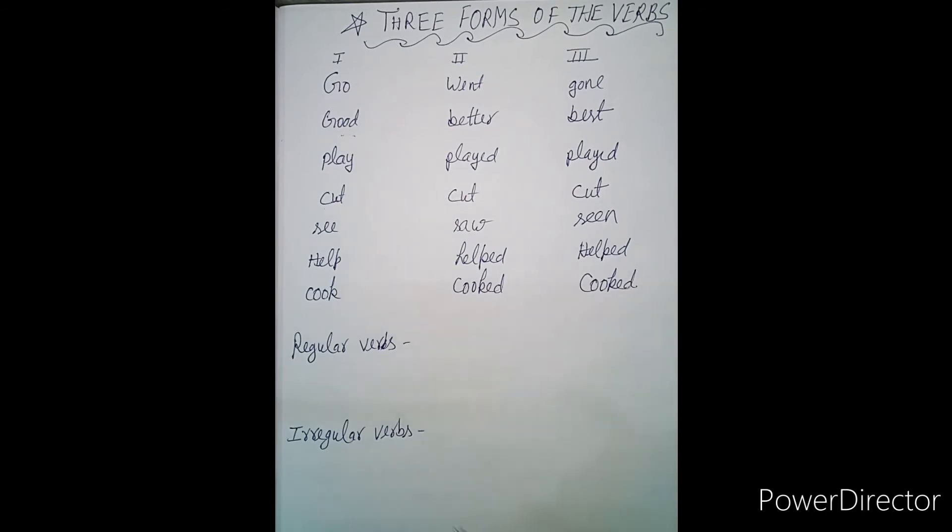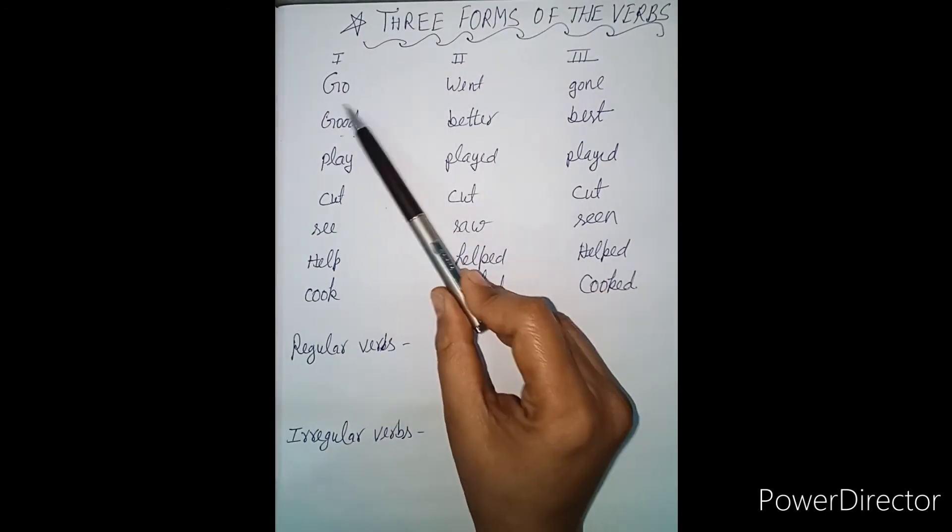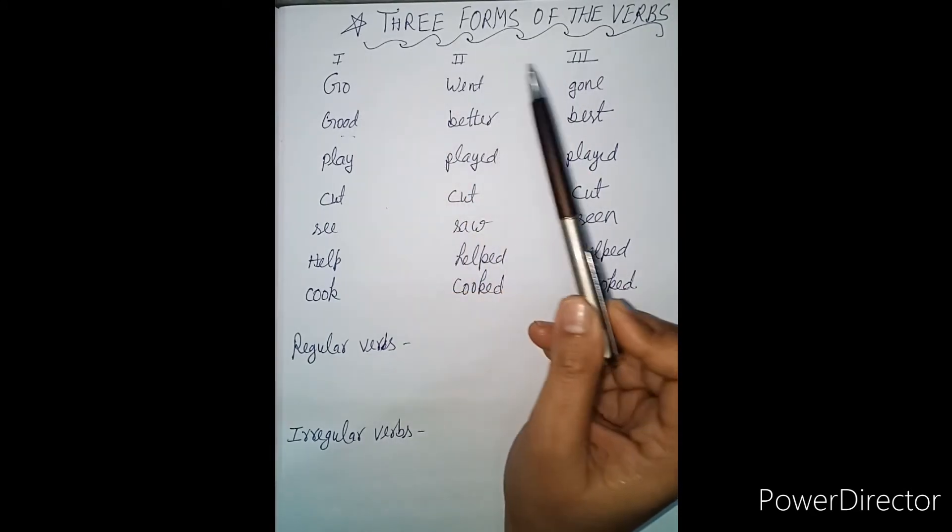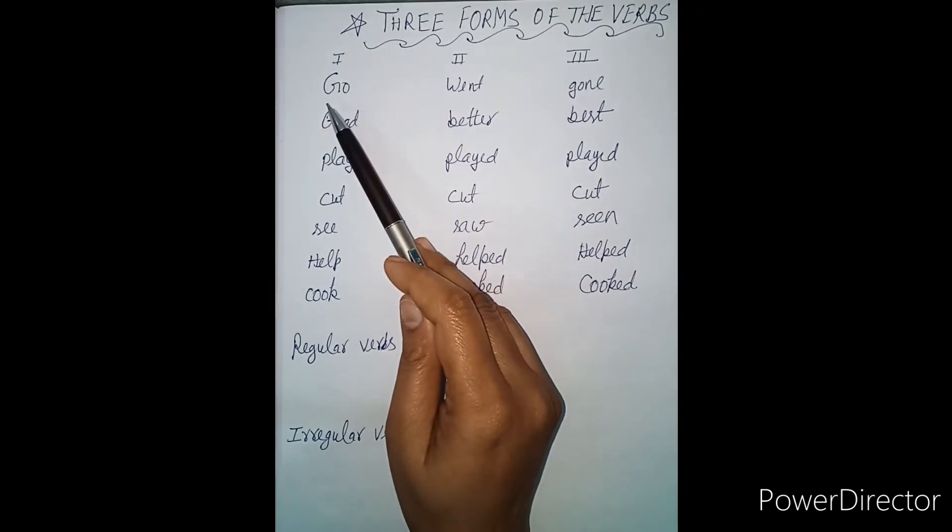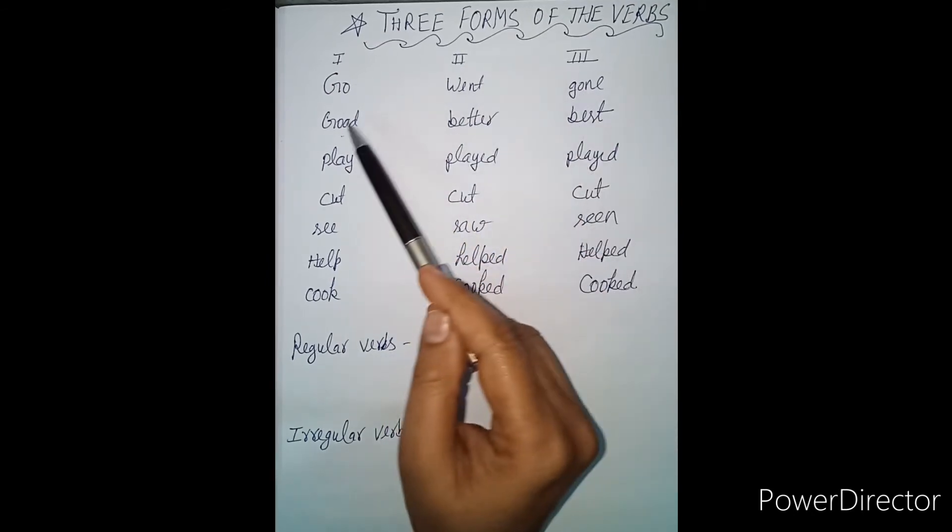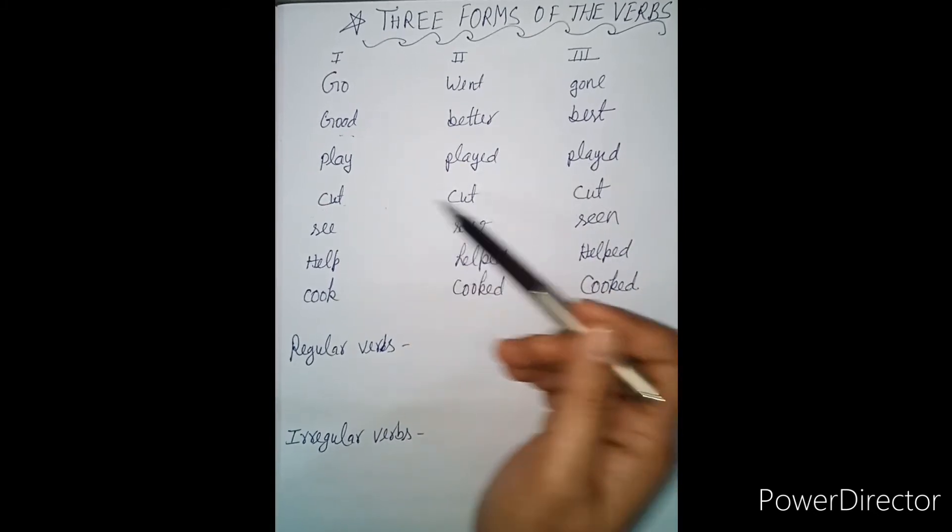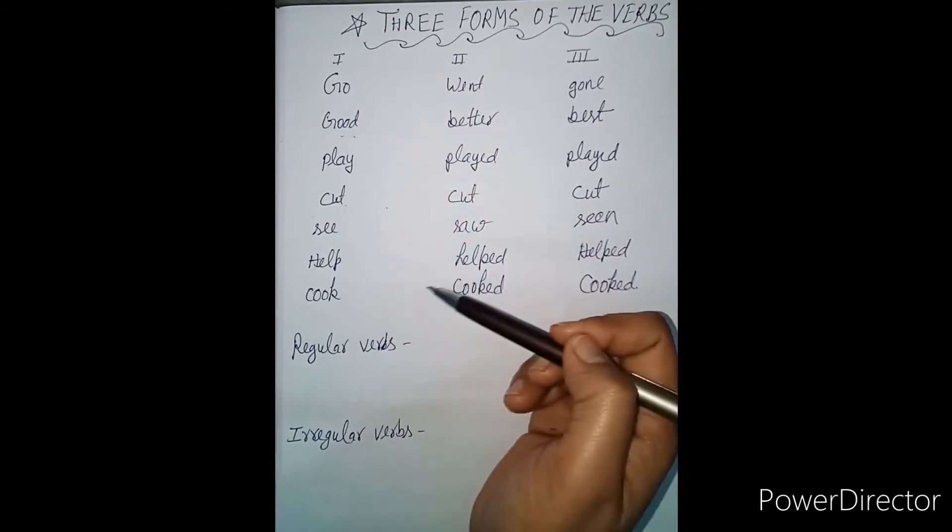So I have written here first form, second form, and third form. Verbs have three forms - first, second, and third. Now notice: go, went, gone; good, better, best; play, played, played; cut, cut, cut; see, saw, seen; help, helped, helped; cooked, cooked, cooked.